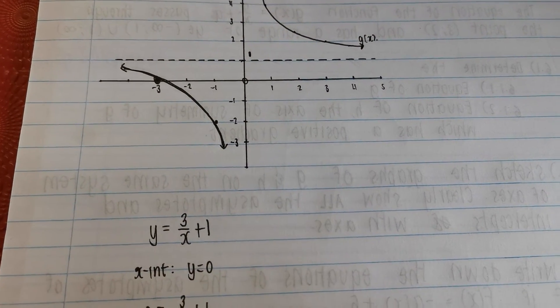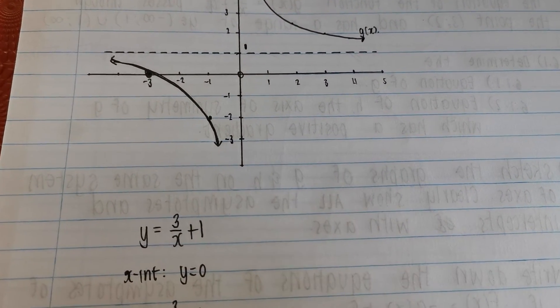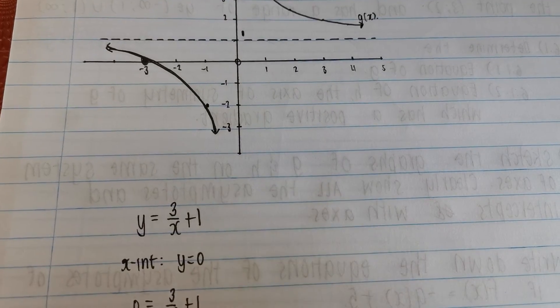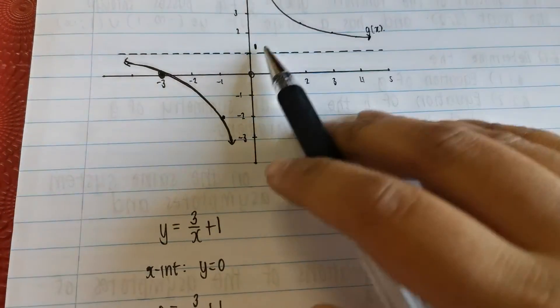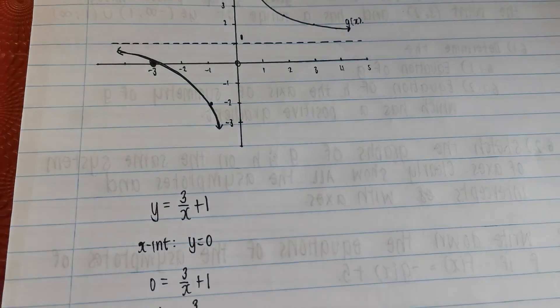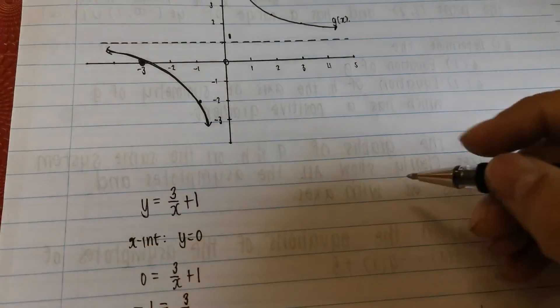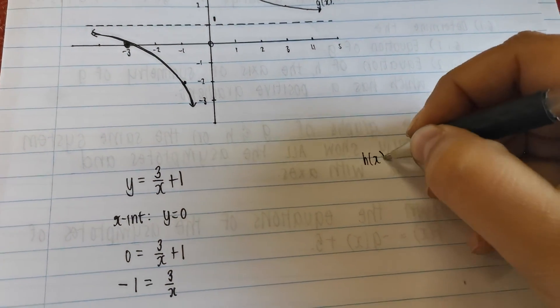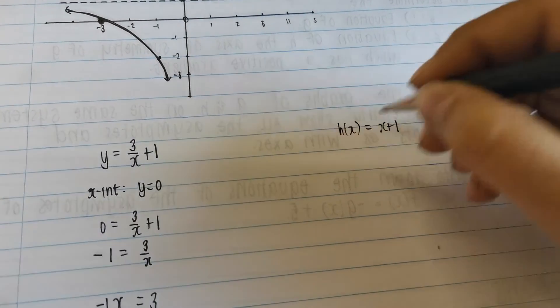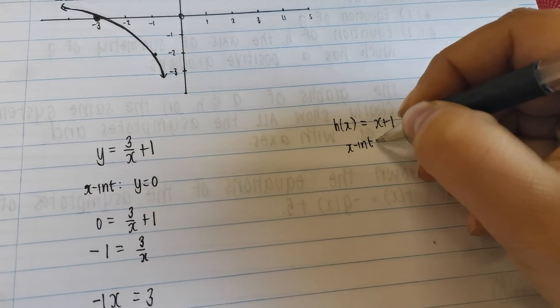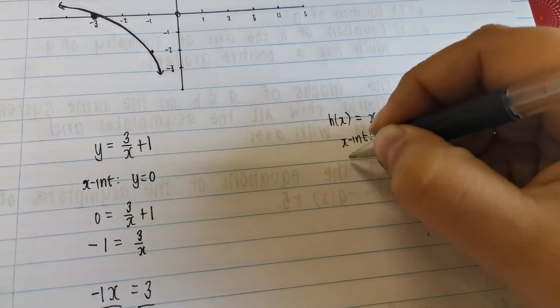And now we need h(x). Now remember, h(x) is our axis of symmetry. So you don't really have to work out the x intercept and y intercept. We know it's going to be passing through this point over here. But I'm just going to show you in case you wanted to know how else to do it. h(x), which was x plus 1. x intercept is where y is equal to 0.